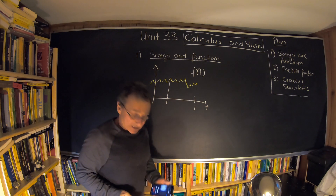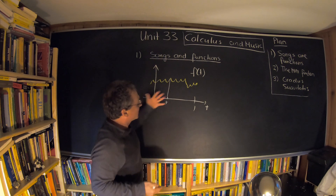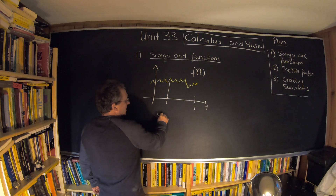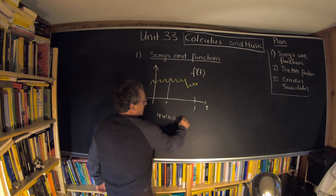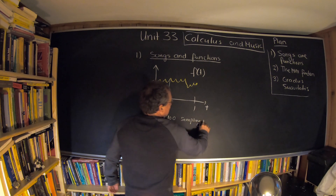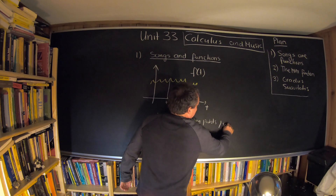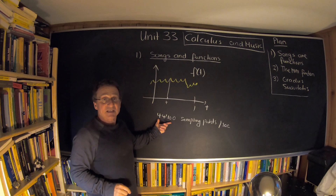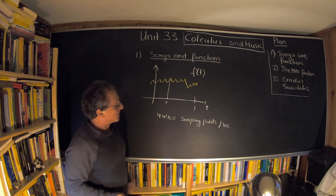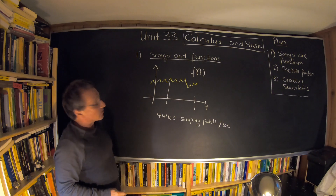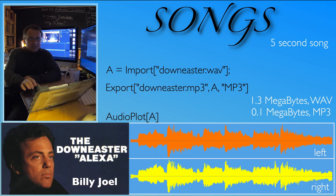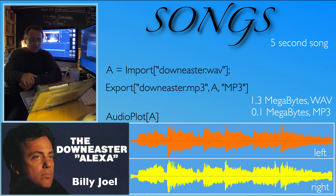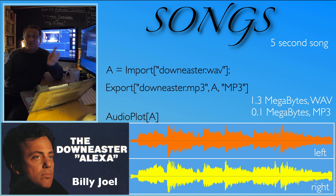The whole function is not stored — it's sampled. A computer has only finitely many data points, so it samples with 44,100 points per second. In about five seconds, around 200,000 points were recorded. Then the function can be reconstructed. We imported a song here — there's actually two tracks, a left and right track, shown in orange and yellow.